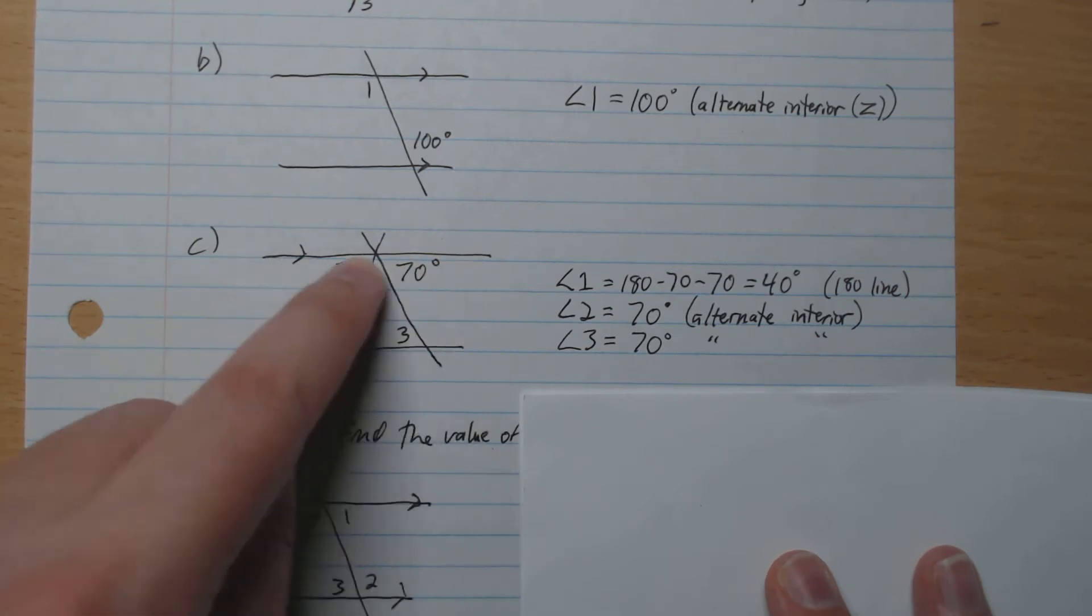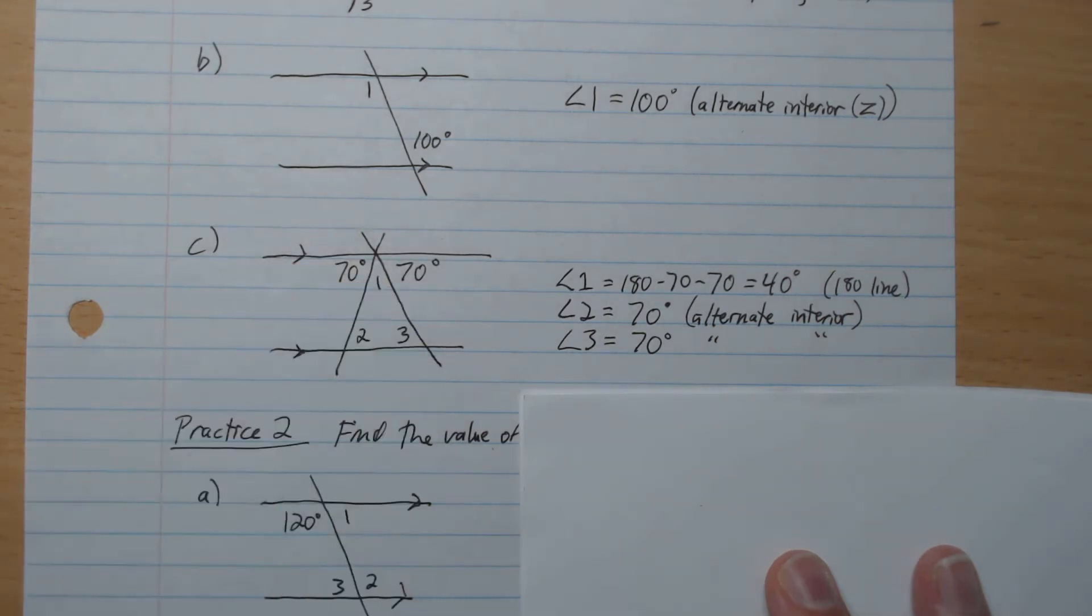Part C, notice that 180 is on a line. So 180 minus 70 minus 70 gives 40. So angle 1 is 40.